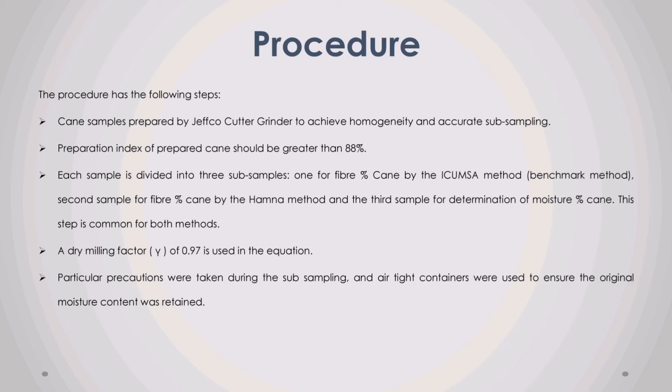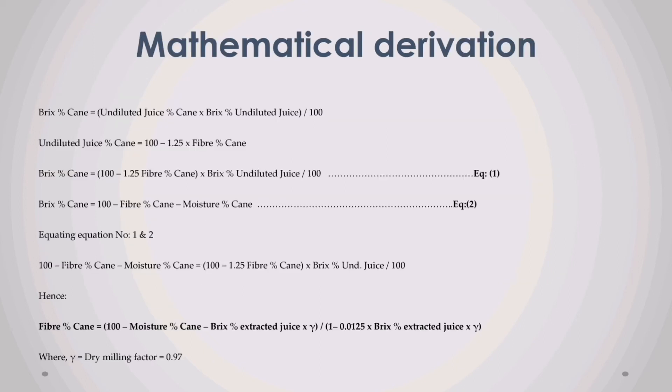This step is common for both methods. A dry milling factor, gamma, of 0.97 is used in the equation. Particular precautions were taken during the subsampling, and airtight containers were used to ensure the original moisture content was retained. Mathematical derivation for the equation to find fiber percent cane: by equating equation 1 and 2, the equation can be derived. The symbol gamma is the dry milling factor with a value of 0.97.